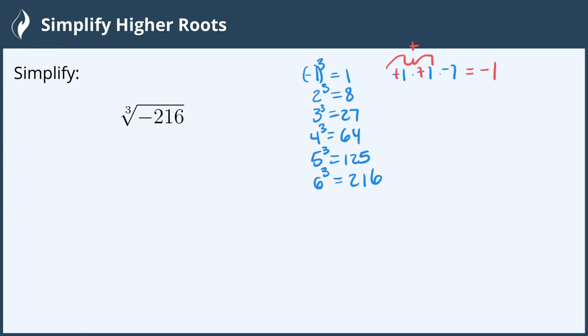This means that all of these cubes, if I change them to be a negative, will be a negative answer. Because a negative times a negative is positive, and then that resulting positive times the last negative will equal a negative.